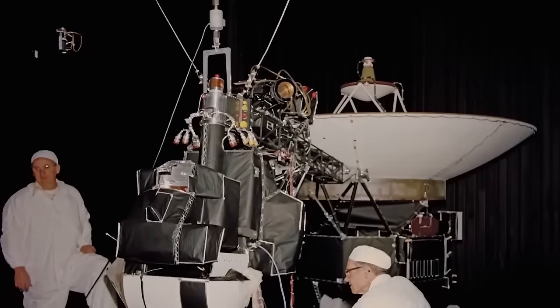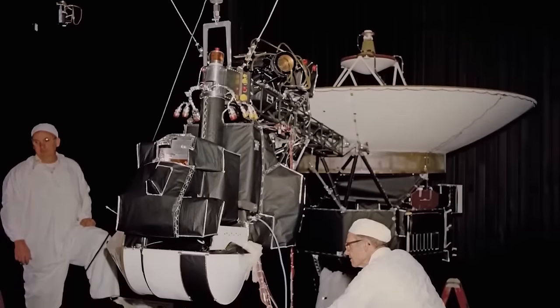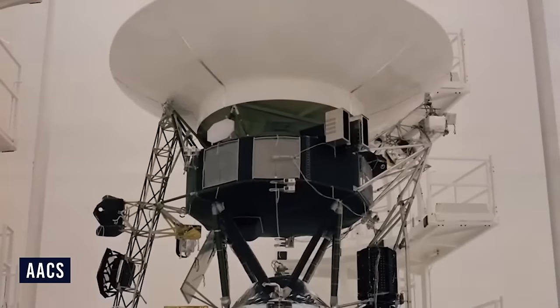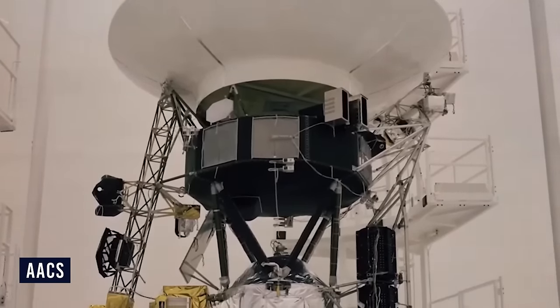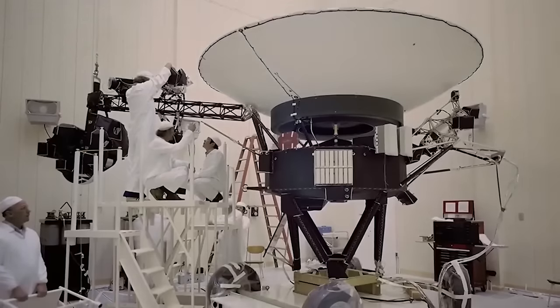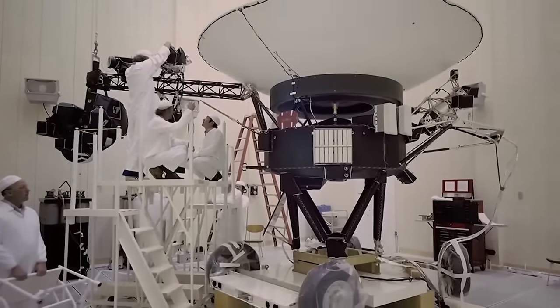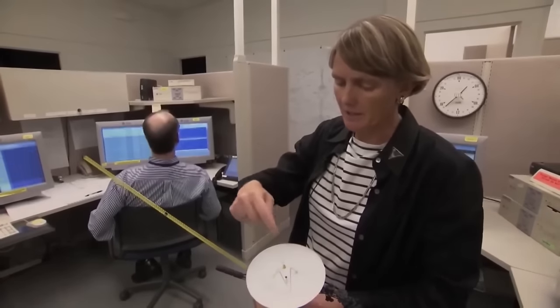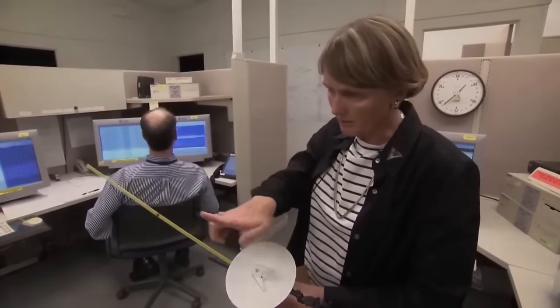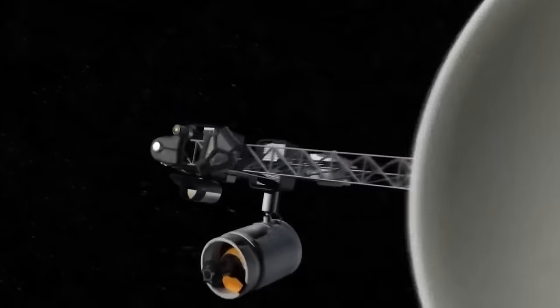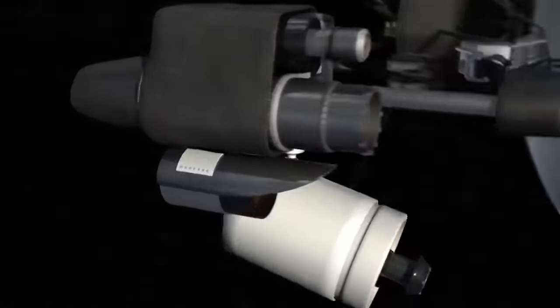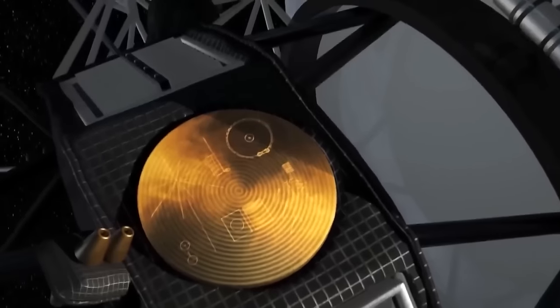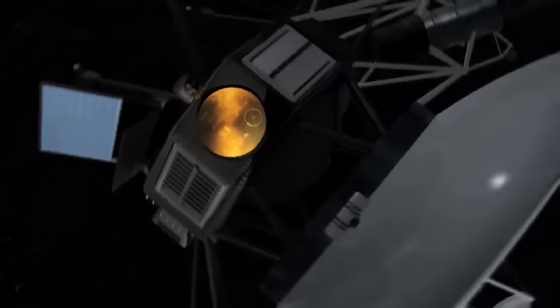It was later that the team found out that the issue was with Voyager 1's Attitude Articulation and Control System. Tasked with keeping the Voyager's antenna pointed to Earth, this complex piece of machinery helps make the transmission of data correct. However, it turned out a small networking problem had arisen, as the AACS was sending telemetry data to the wrong computer. You see, the computer involved in this perplexing turn of events had failed some time ago, and so any data sent in by the AACS got corrupted immediately. It was this corrupted data that ended up on the scientists' table at NASA, making them scratch their heads.